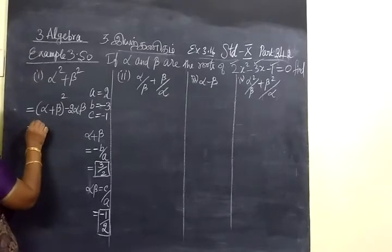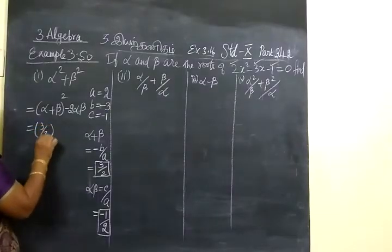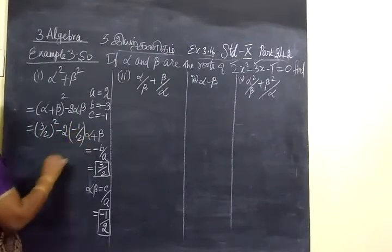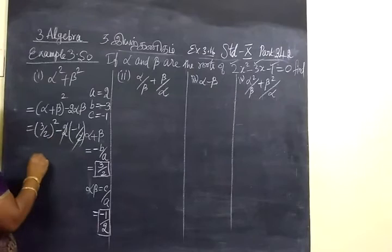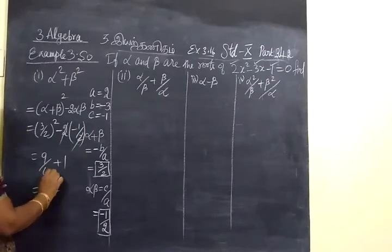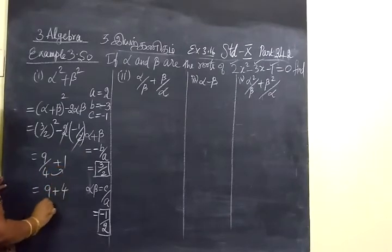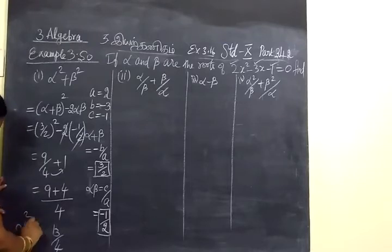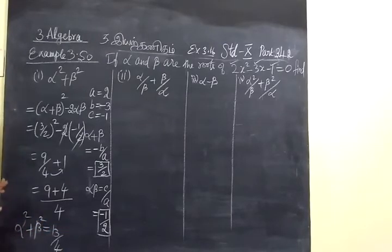Now substitute: alpha plus beta is 3 by 2, so we get 3 by 2 whole squared minus 2 times alpha beta, which is minus 1 by 2. This gives 9 by 4 plus 1, and cross multiplying gives 9 plus 4 over 4, so the answer is 13 by 4.